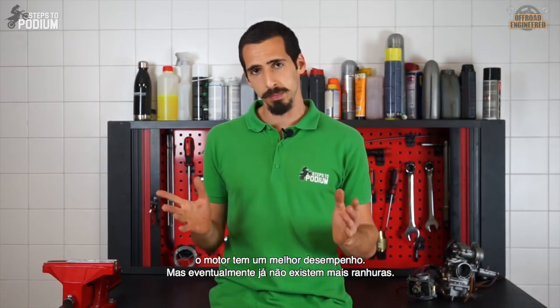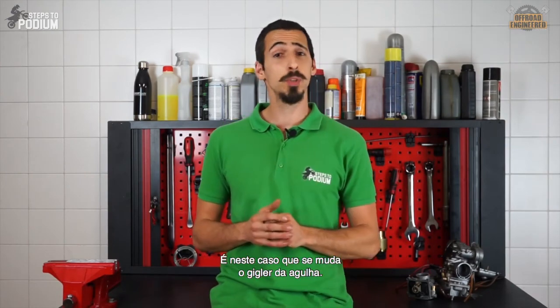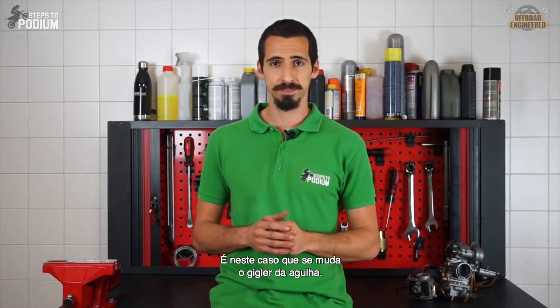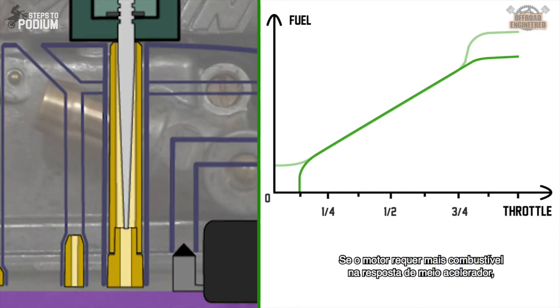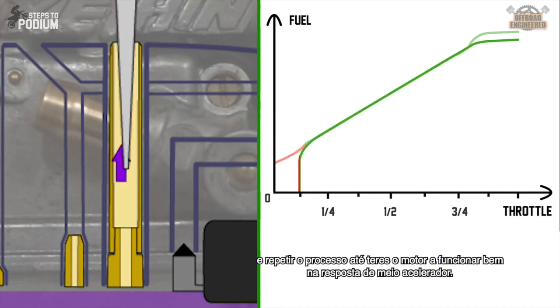But let's say that every time you place the circlip on a lower groove, the engine performs better, but the needle has no more grooves left. This is where you change the needle jet. If the engine requires more fuel on mid-throttle and on full-throttle it runs just fine, just install a bigger needle jet. Don't forget to reset the needle circlip in the middle position and repeat the process until you have the engine running butter smooth on mid-throttle.